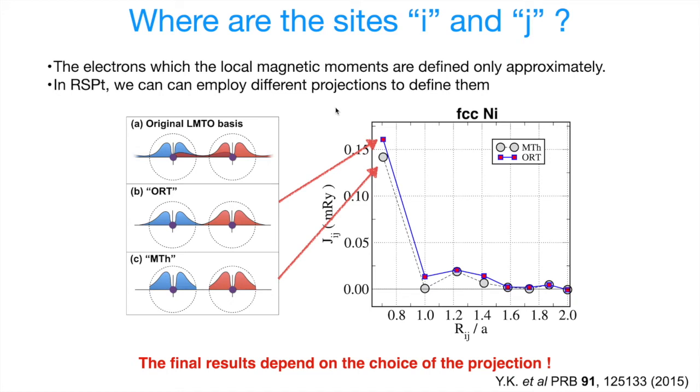Well, how do we define what is belonging to site I and site J? The spins are formed by electrons around these atoms, but they are only defined approximately. So the typical approach is to assign all the electrons belonging to this muffin tin sphere to corresponding atom. But this is only one choice. In principle, we can also take the original basis and orthonormalize it, and we will end up with another set of orbitals, which will also be orthogonal on different sites. But now we will have quite different spatial form.